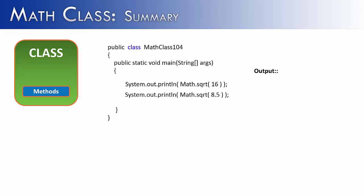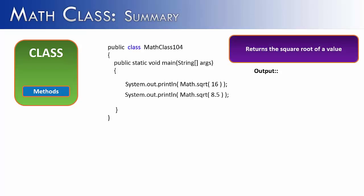The first method we're going to look at is the square root method. When talking about methods, the first thing we want to ask is: what is its function, what is its purpose? The purpose of square root is to return the square root of a value.